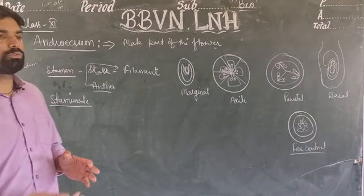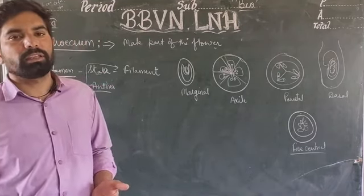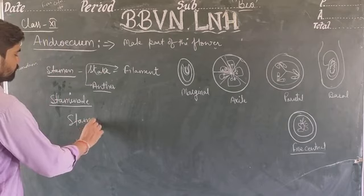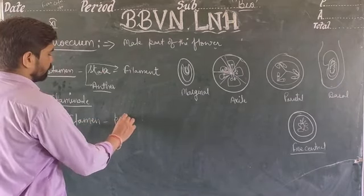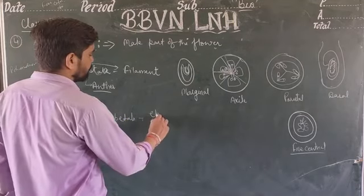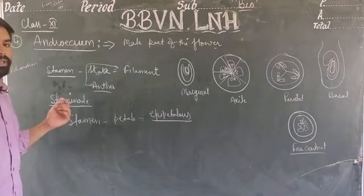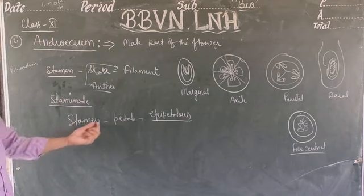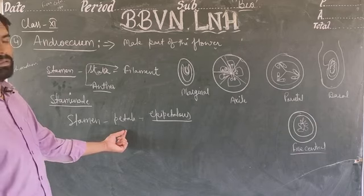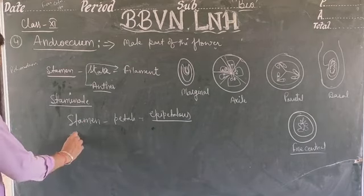Now we will talk about the stamen. If the stamen is connected with the petal, it is known as epipetalous.